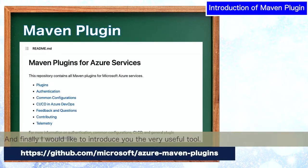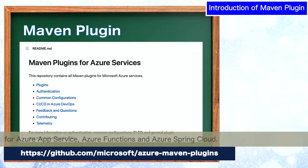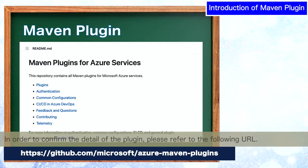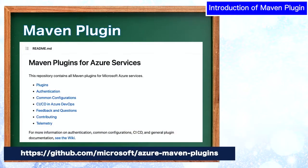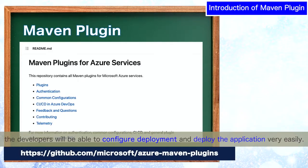Finally, I would like to introduce you to a very, very useful tool. The Microsoft Java development team has been creating Maven plugins for Azure App Services, Azure Functions, and Azure Spring Cloud. In order to confirm the details of this plugin, you can see the following URL. If the Java developer uses this plugin, the developer will be able to configure the deployment and deploy the application very, very easily.